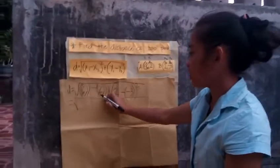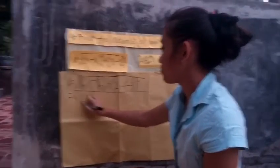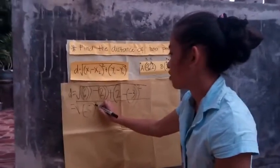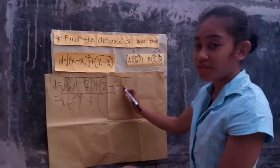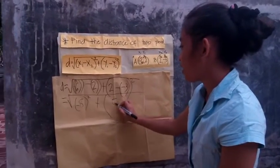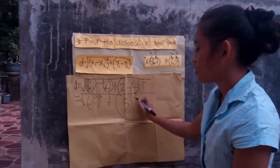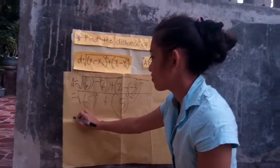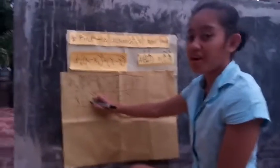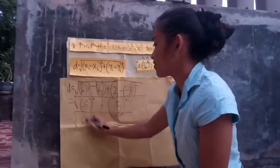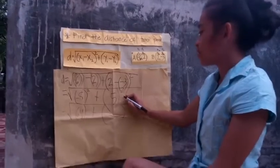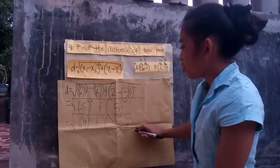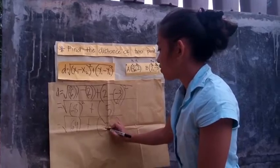Negative 6 minus 2 is negative 8, squared, plus 2 minus negative 3, which is positive 5, squared. Negative 8 times negative 8 is positive 64, plus positive 5 times positive 5, which is 25.